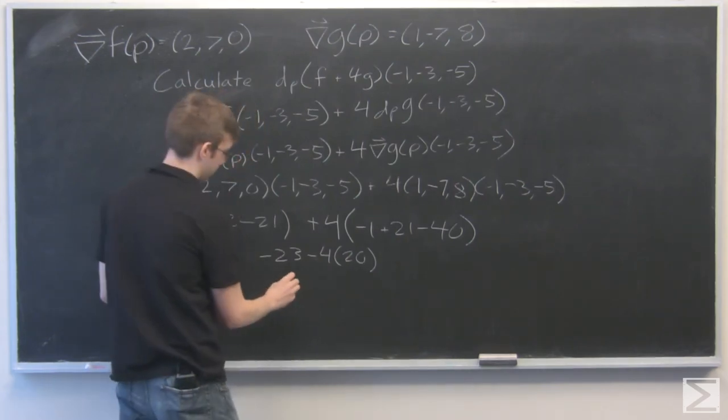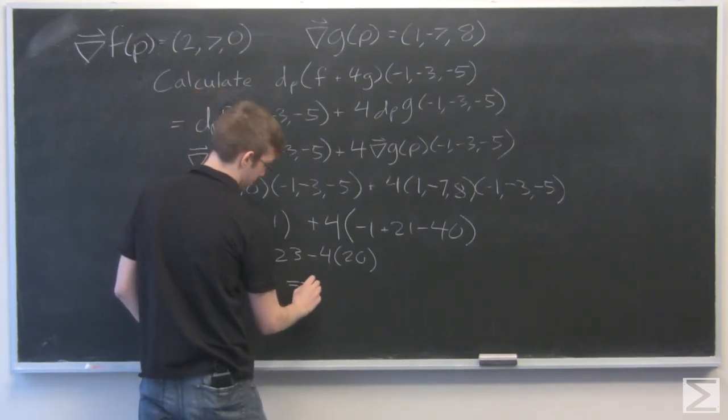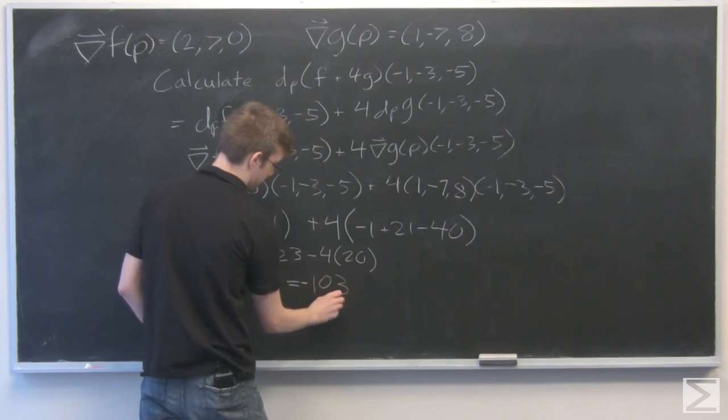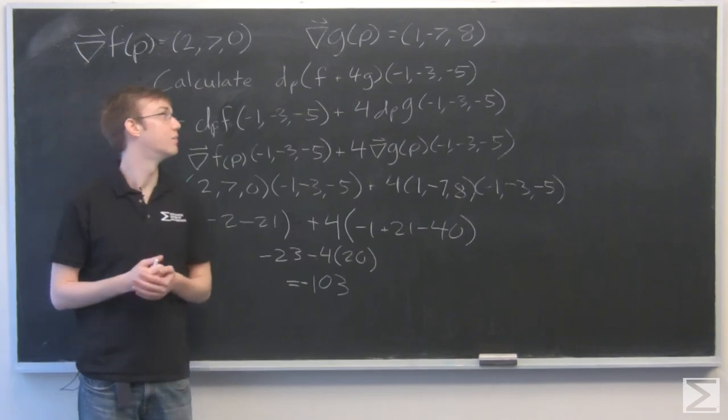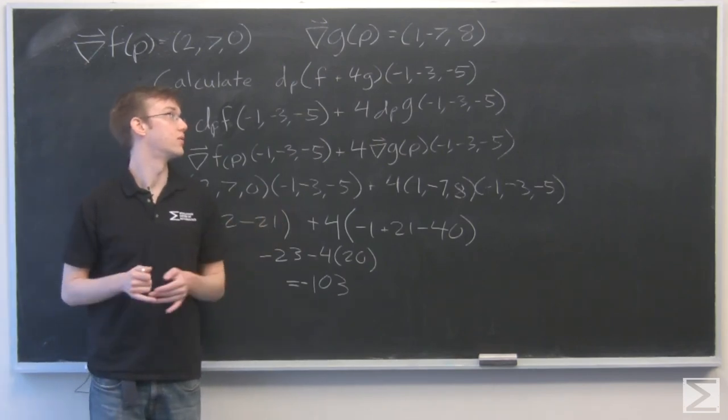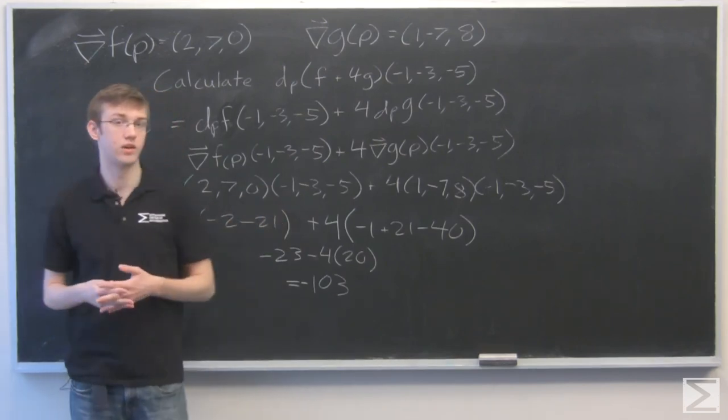And that just simplifies to minus 103. So your total derivative of f plus 4g with respect to minus 1, minus 3, minus 5 is negative 103.